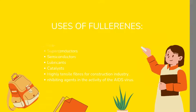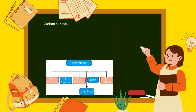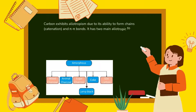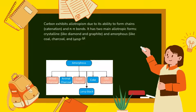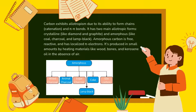Amorphous forms of carbon: carbon exhibits allotropy due to its ability to form chains (catenation) and π bonds. It has two main allotropic forms — crystalline (like diamond and graphite) and amorphous (like coal, charcoal, and lamp black). Amorphous carbon is free, reactive, and has localized pi electrons. It is produced in small amounts by heating materials like wood, bones, and kerosene oil in the absence of air.